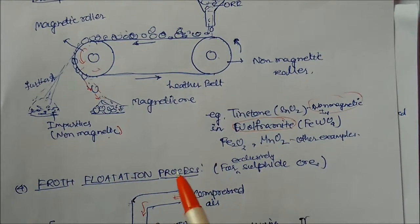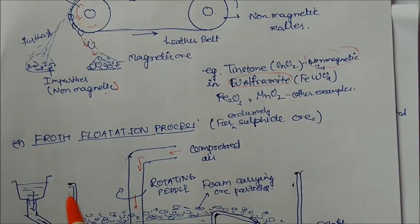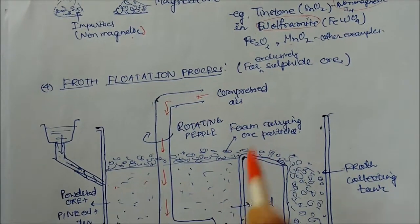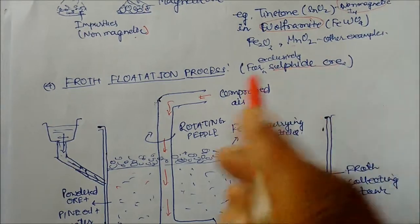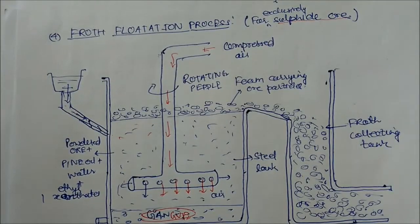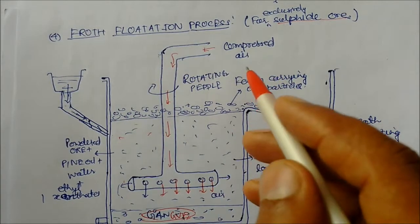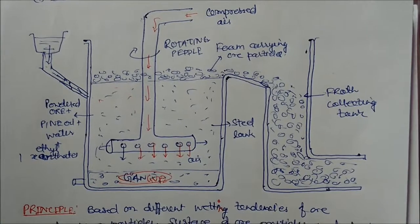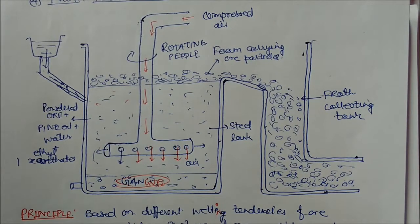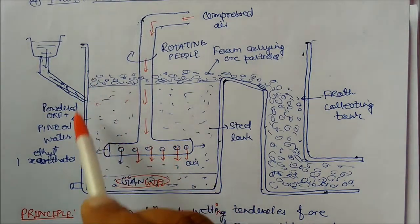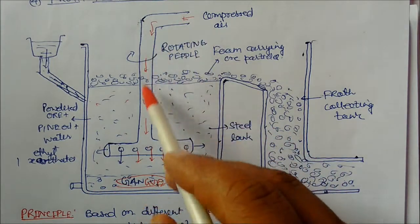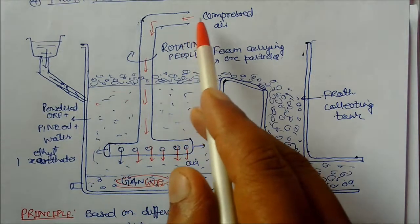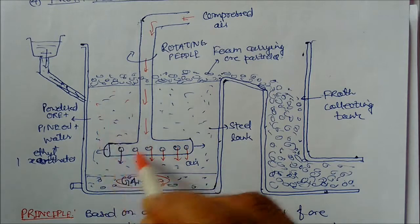The next important process is the froth flotation process. This process is exclusively used for sulfide type of ores such as zinc sulfide, cinnabar, galena, and pyrite. In the diagram, there is a big steel tank with a rotating paddle containing holes through which air is passed. The tank is filled with powdered sulfide ore.